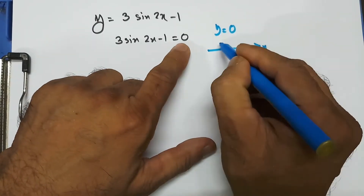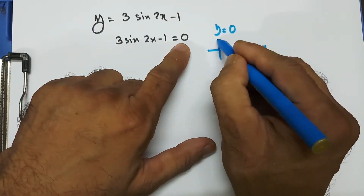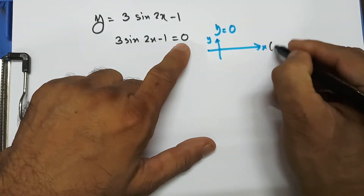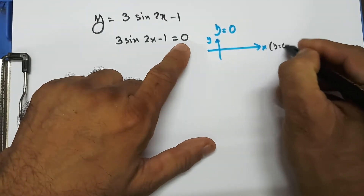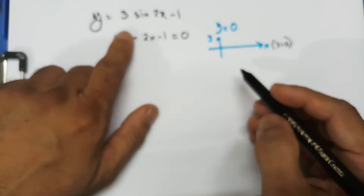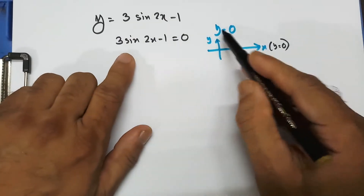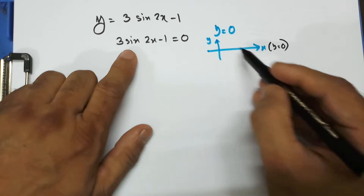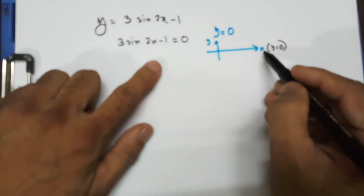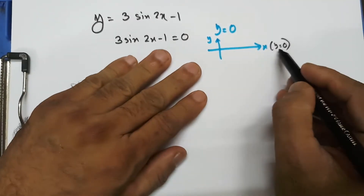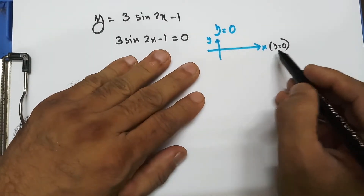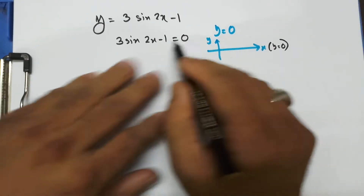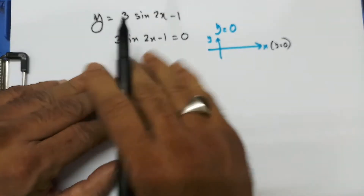This is my x-axis and this is my y-axis. The equation of the x-axis is y equal to 0. This trigonometric function asks how many times, or where, this trigonometric graph intersects with the x-axis or the line y equal to 0. How many times or where it intersects — that's how to solve this.